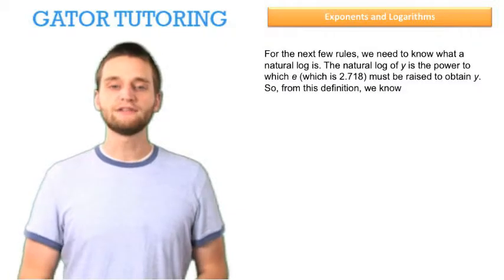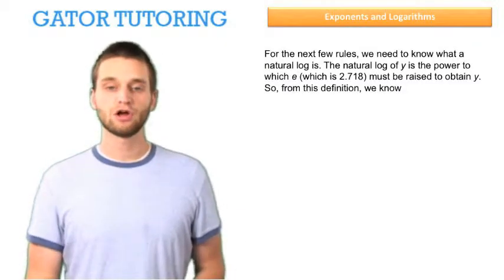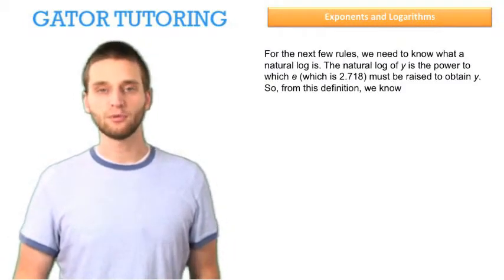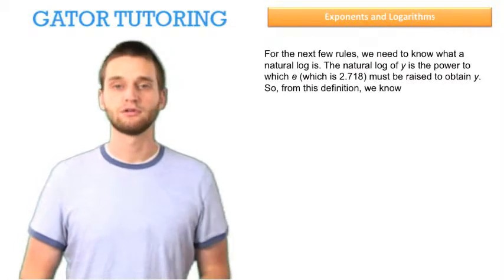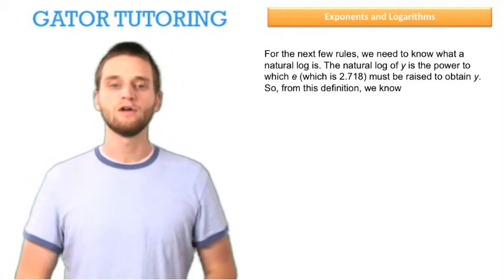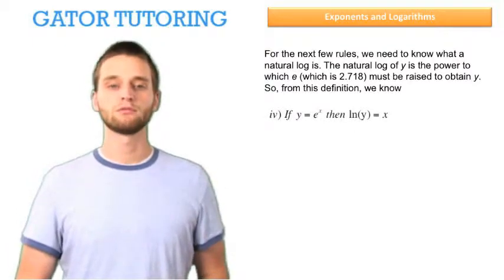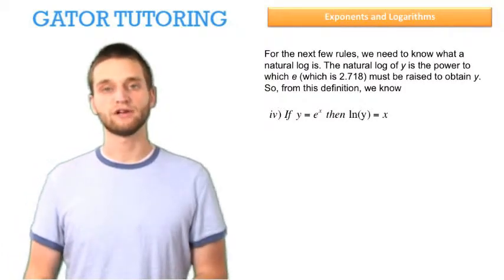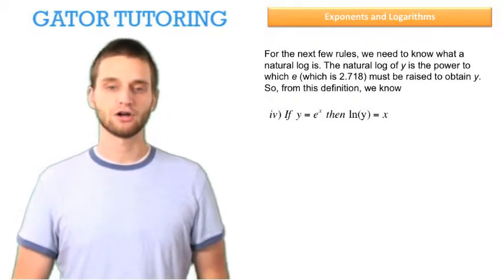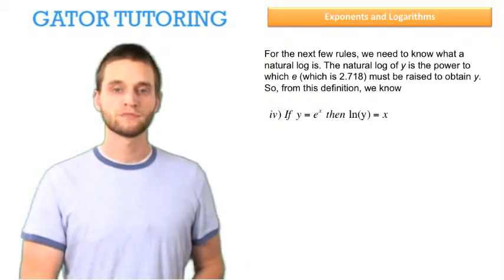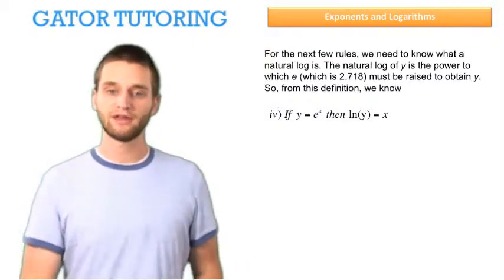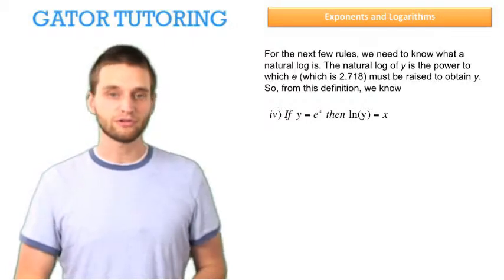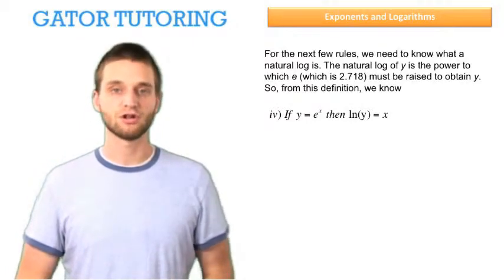For the next few rules, we need to know what a natural log is. The natural log of y is the power to which e, which is just a constant equal to 2.718, must be raised to in order to obtain y. From this definition, we know the fourth rule is: if y equals e to the x, then the natural log of y is equal to x. Because the natural log of y is the power to which e must be raised to obtain y. And so if y equals e to the x, what power must e be raised to to obtain y? We know it's x. That's why the natural log of y is x.